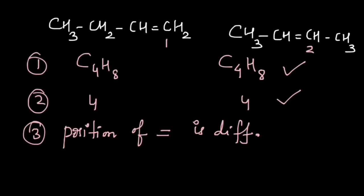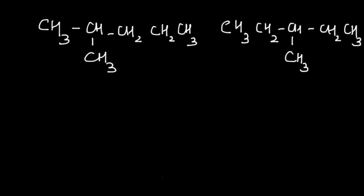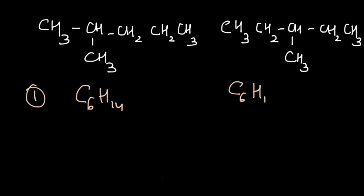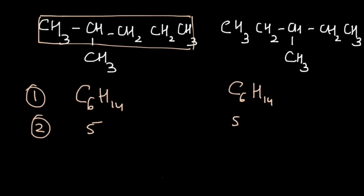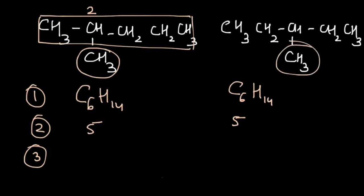Let's look at how substituents are used to decide position isomerism. Look at these two compounds and write down their molecular formula. The molecular formula is C6H14 in both compounds, and the chain length for both is five carbon atoms. Now look at the position of substituents: in the first compound, the CH3 group is present on the second carbon atom, whereas in the second compound CH3 is present on the third carbon atom. So there is a difference in the position of the substituent.